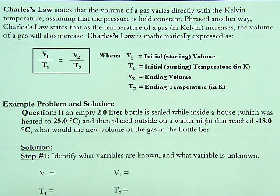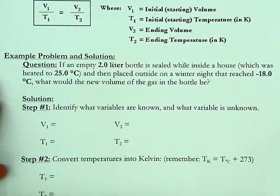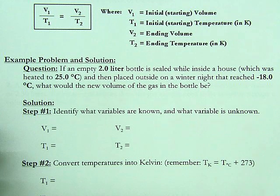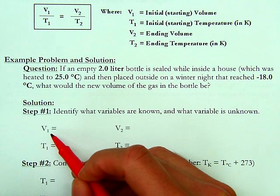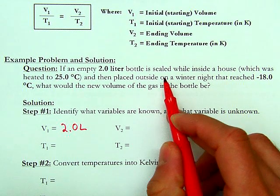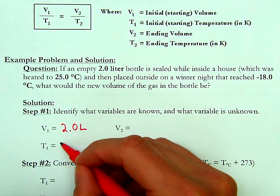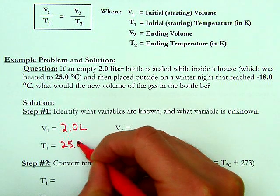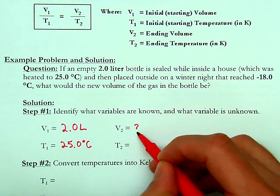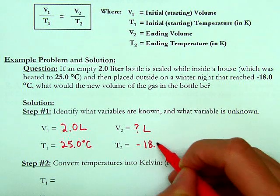What I like to do each time is identify what I do and don't know. In this problem, we know the starting volume is 2 liters. It's sealed inside a house at a temperature of 25.0 degrees Celsius. The ending volume is what we don't know — that's our question mark, some number of liters. And our ending temperature is minus 18 degrees Celsius.